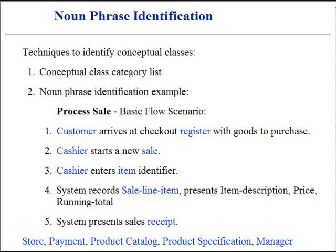There is no such thing as an absolutely correct list. It is a somewhat arbitrary collection of abstractions and domain vocabulary that the modelers consider noteworthy. Nevertheless, by following the identification strategies, similar lists will be produced by different modelers.